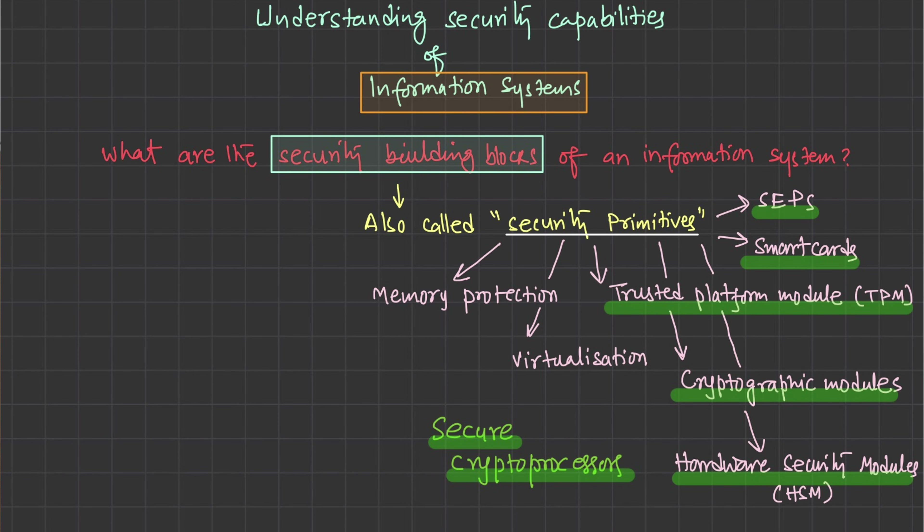Secure crypto processors' whole job is to isolate encryption, decryption, and the holding of security keys in a different device or module, so that we enforce the security principle of domain separation — dividing the domain providing system functionality from the domain responsible for the cryptographic part, such as the process doing encryption/decryption and holding the public and private keys.